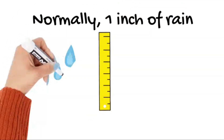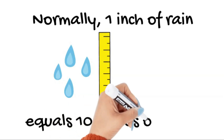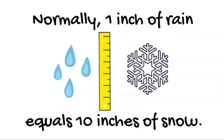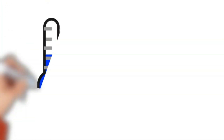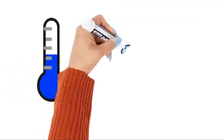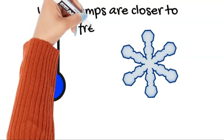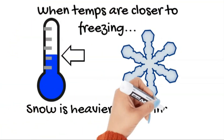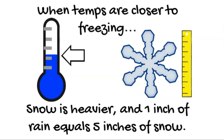Normally, 1 inch of rain equals 10 inches of snow. When temperatures are closer to freezing, snow is heavier and an inch of rain equals 5 inches of snow.